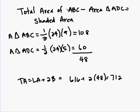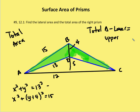So here we have the total area of ABC minus the area of ADC is equal to the shaded area. So let's review that again. The total area of the entire triangle minus this lower triangle ADC is equal to the shaded region.